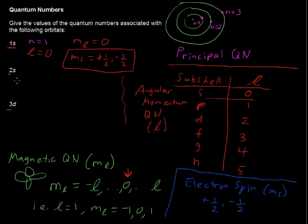Now, with the next one, 2s, n equals 2. We have L equals 0 again. M sub L equals 0 again. And our M sub S equals negative one half or positive one half.